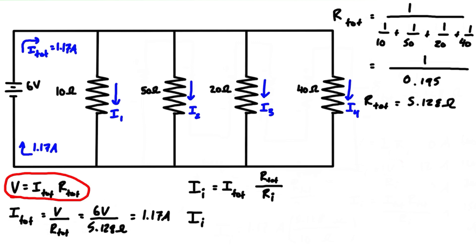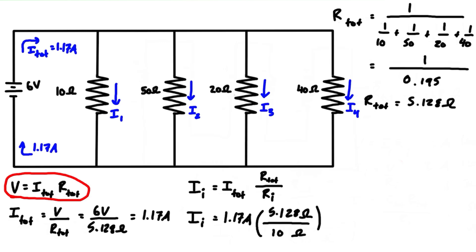Now we can fill in our values. The individual current equals the total current of 1.17 amps times 5.128 ohms over the individual resistance. For I1, that means dividing by 10 ohms.